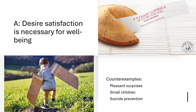The first version of the desire satisfaction view is version A: desire satisfaction is necessary for well-being. That is, a life cannot go well unless the desires in it — all the desires in it — are satisfied. There are some counterexamples mentioned in the text, and I wanted to flesh some of those out. One counterexample to view A is this notion of pleasant surprises — something that might improve your well-being even though you didn't desire it.